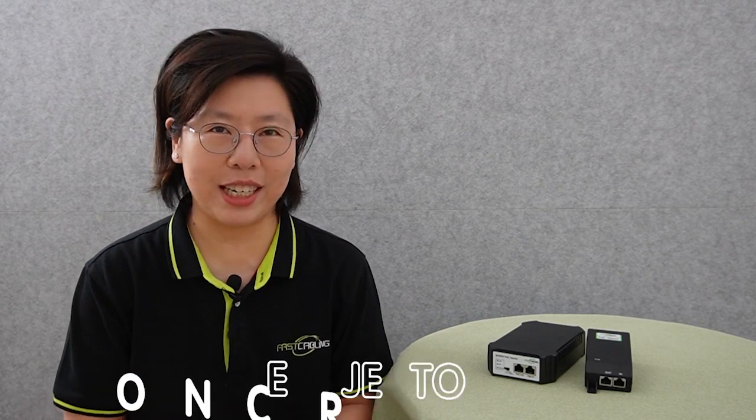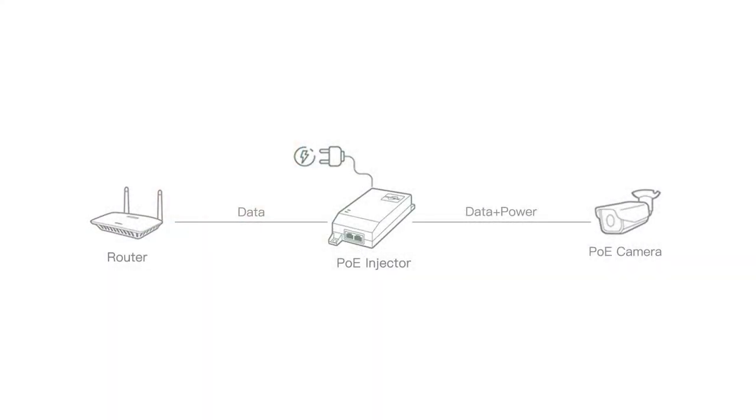One of the fundamental components in a Power over Ethernet setup is the PoE injector. This device plays a pivotal role in transmitting both power and data over a single Ethernet cable. Essentially, a PoE injector adds PoE capability to non-PoE network links, allowing non-PoE devices to function within a PoE-enabled network. It achieves this by injecting power into the Ethernet cable, ensuring seamless operation for devices like IP cameras, VoIP phones, and other networked equipment.